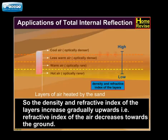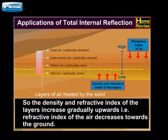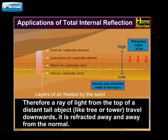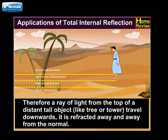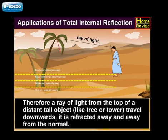So, the density and refractive index of the layers increase gradually upwards, i.e. the refractive index of the air decreases towards the ground. Therefore, a ray of light from the top of a distant tall object like a tree or tower travels downwards and is refracted away and away from the normal.